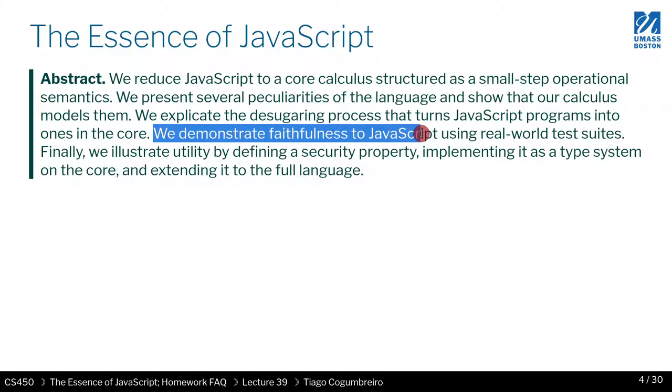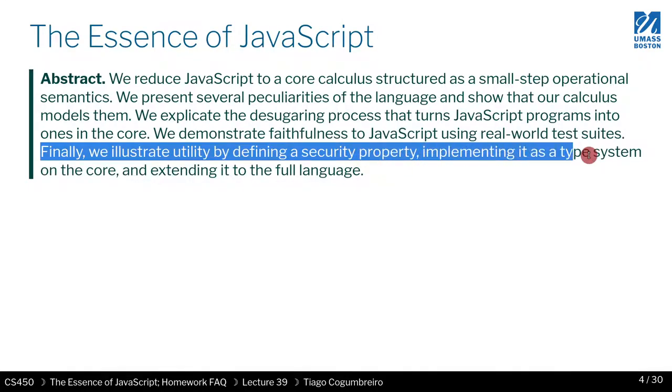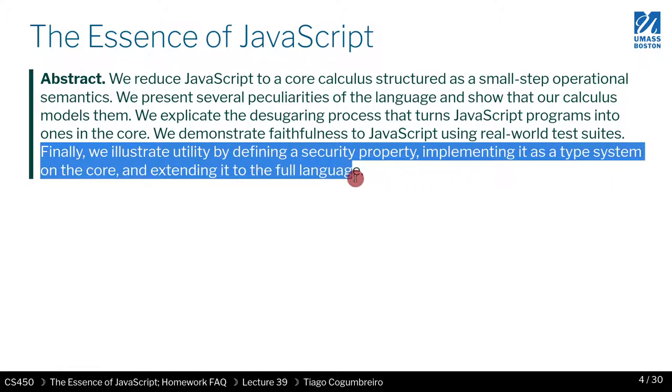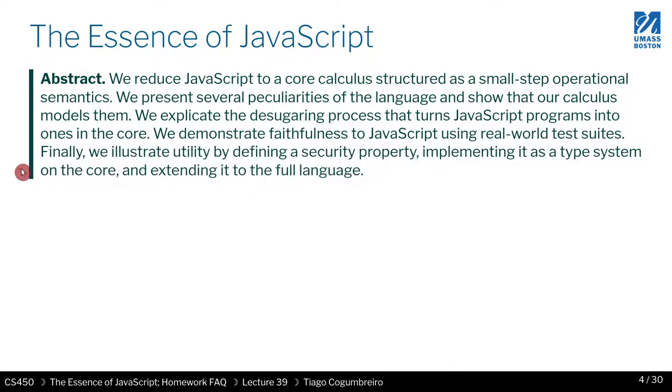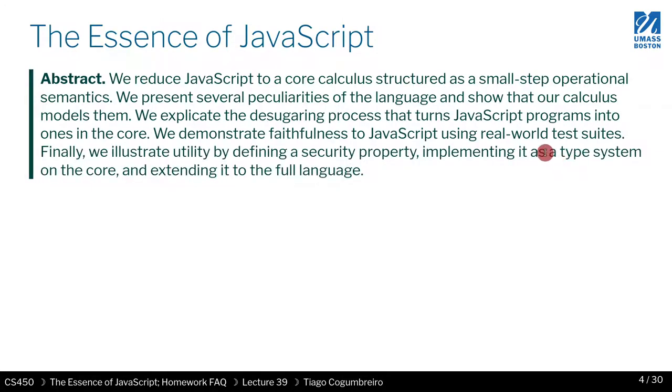We demonstrate the faithfulness to JavaScript using real-world test suits. They have a bunch of test suits that they use to make sure that their interpreter does what it's supposed to do. Finally, we illustrate the utility by defining a security property and implementing a type system on the core and extending it to the full language. That's what they mean by type system—rules that you can use to analyze the source code and find security bugs.